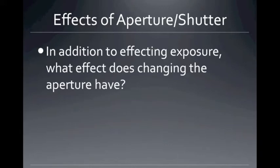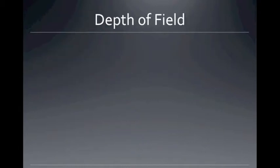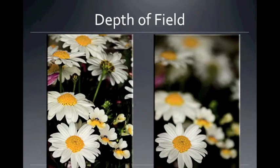Effects of the aperture and shutter. Quickly on the aperture: in addition to affecting exposure — a larger aperture lets in more light, a smaller aperture lets in less light — the aperture has another effect on what happens in your picture, and that's on the depth of field. If you compare these two pictures, the one on the left has a larger depth of field, meaning more things are in focus from front to rear. The one on the right has a blurry background and the front in focus — that's a smaller depth of field, controlled by the aperture.